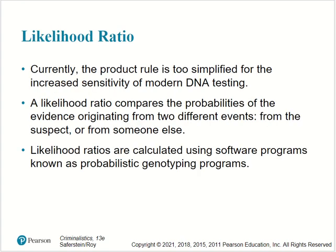The likelihood ratio: currently the product rule is considered too simplified for the increased sensitivity of modern DNA testing. A likelihood ratio compares the probabilities of the evidence originating from two different sources — from the suspect or from someone else. Likelihood ratios are calculated using software programs known as probabilistic genotyping programs.